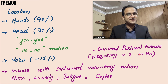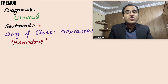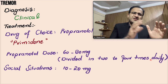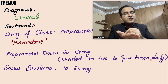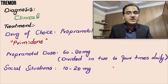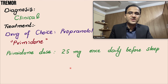Diagnosis of essential tremor is clinical. Treatment is usually not needed, but if the patient wants treatment or if the tremor is exaggerated, propranolol is the drug of choice, with a dose of 60 to 80 mg divided into 2 to 4 daily doses. Primidone is also an important drug for essential tremor, dosed at 25 mg once daily before sleep. For social situations, the patient can take an extra dose of 10 to 20 mg of propranolol.